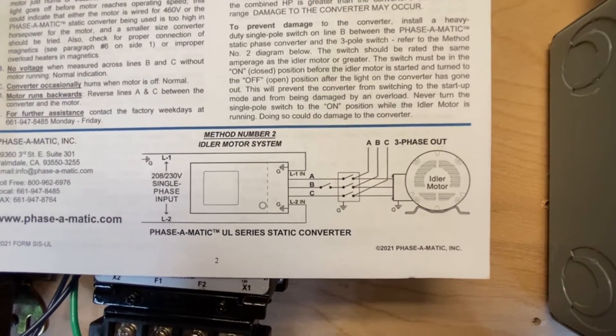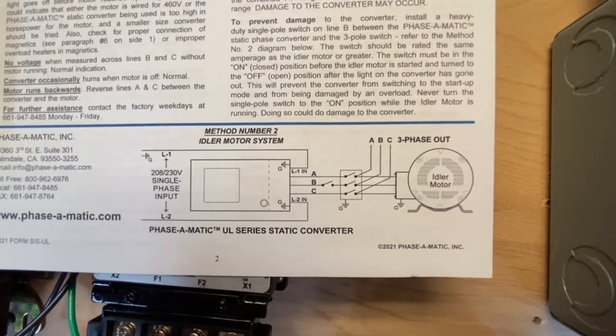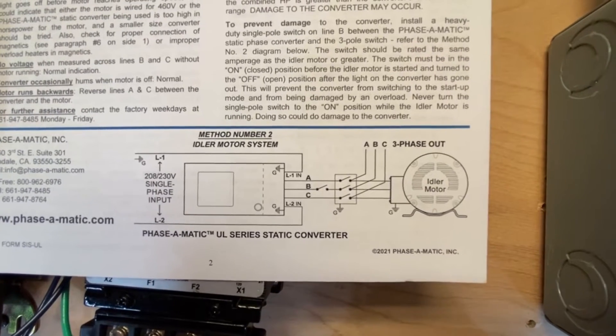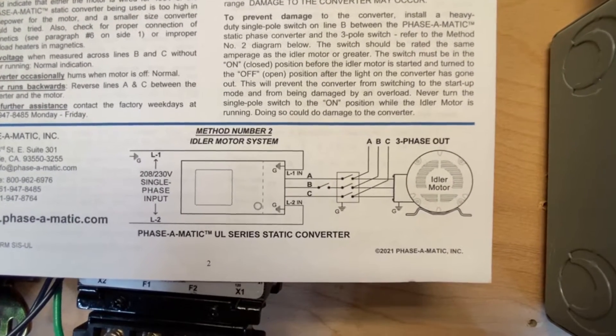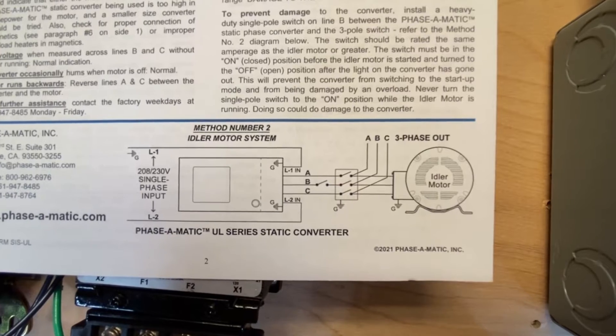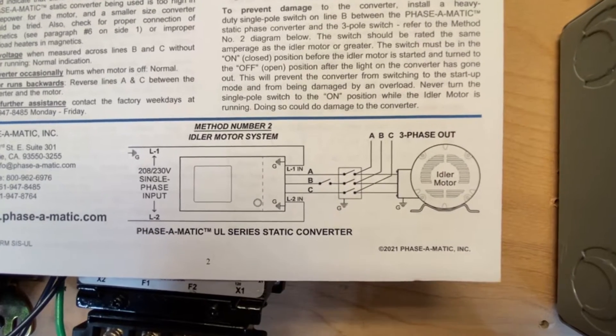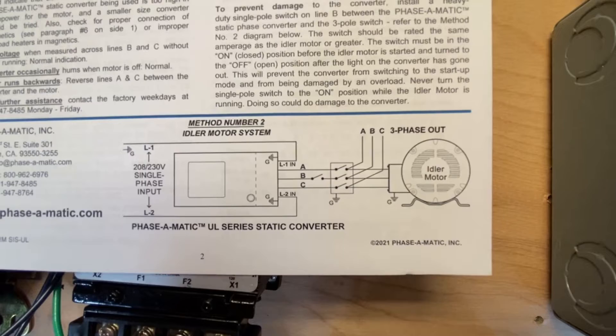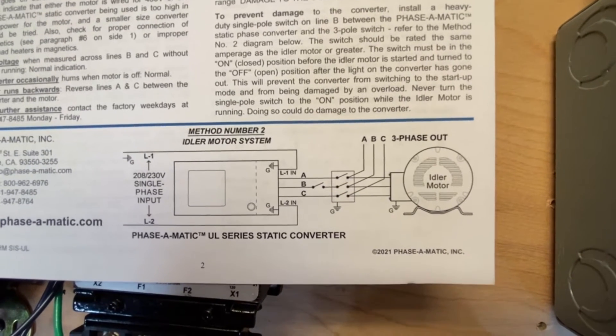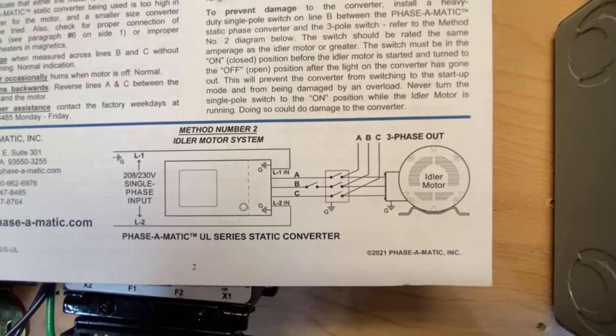So, as you see on the left, 220 comes in. Phase-O-Matic generates all three phases temporarily just to get the motor started. Then you disconnect that third wire, B, using one of the two switches you saw in the silver box,